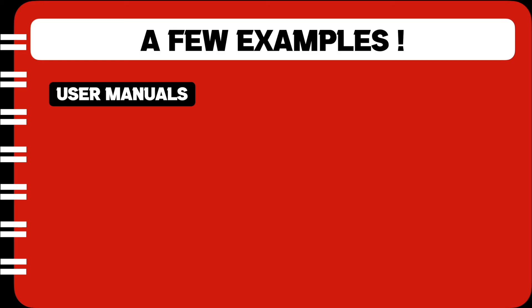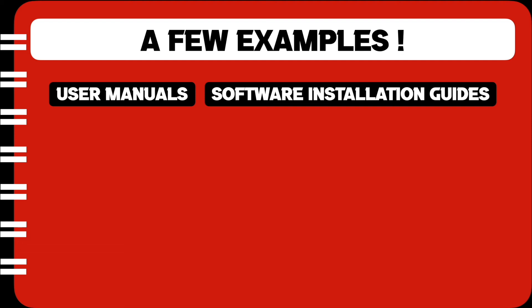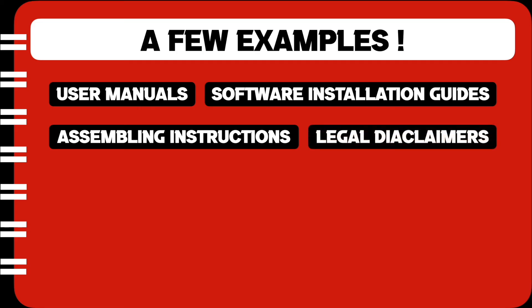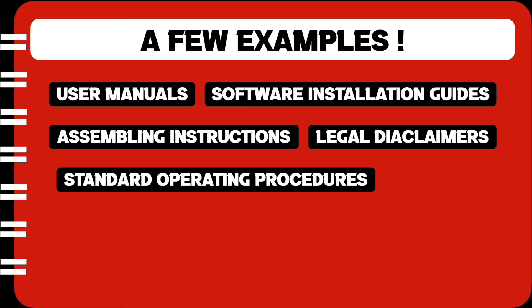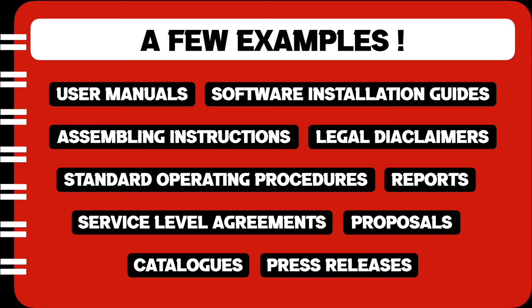So here are a few examples of technical writing. You will often come across user manuals when you buy a new product like a DSLR camera. You also come across software installation guides every time you want to install new software on your computer. We have assembling instructions that come with a writing desk that you buy. We also come across legal disclaimers, for example, when we buy a new insurance policy. We have standard operating procedures which employees in most companies have to follow, then reports of different kinds, service level agreements when we sign into a new job, proposals for mergers and acquisitions, catalogues, and even press releases. These are all examples of different types of technical writing.